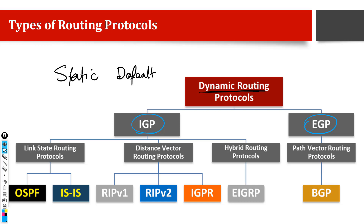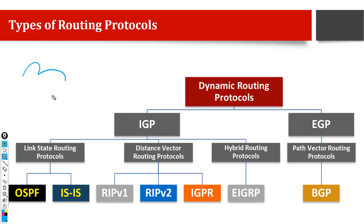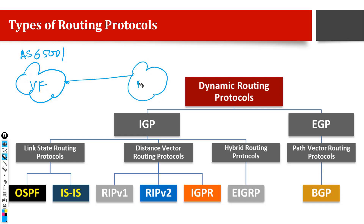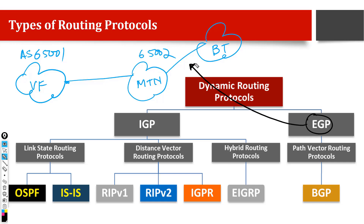Within one system — like Vodafone, like MTN, like British Telecom — within one autonomous system, within one network under a single management domain, they run inside that network. EGP protocols run between different networks. For example, a network with autonomous system number 65001 might be Vodafone, another might be MTN with autonomous system number 65002. These different networks are connected using protocols called EGP — Exterior Gateway Protocol.